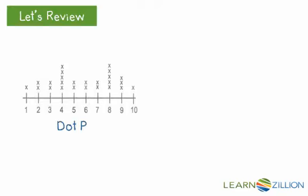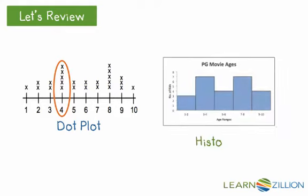Let's review. This is a dot plot and the x's represent the frequency of occurrence. And in a histogram, we talk about that with the ranges and the bars.